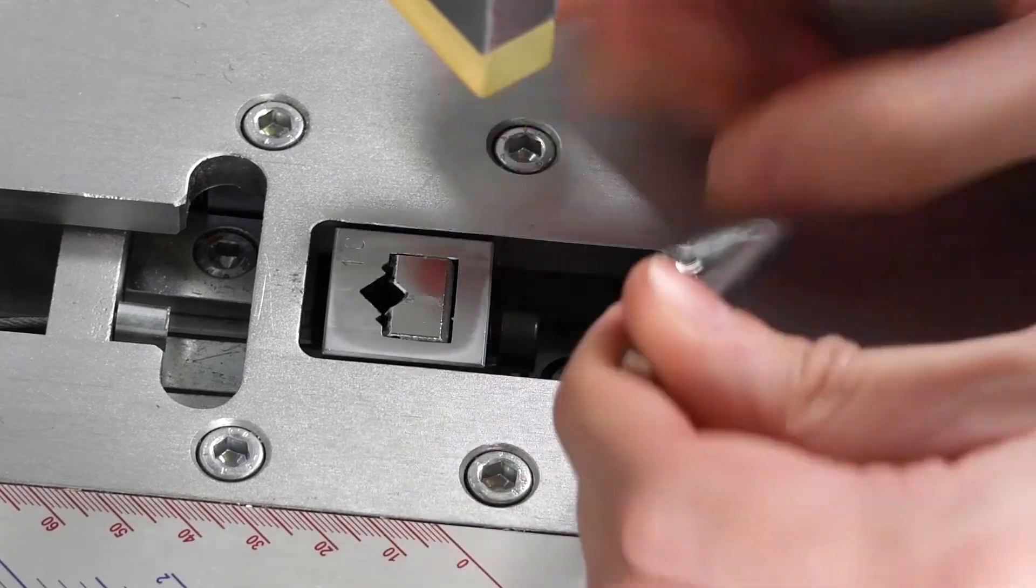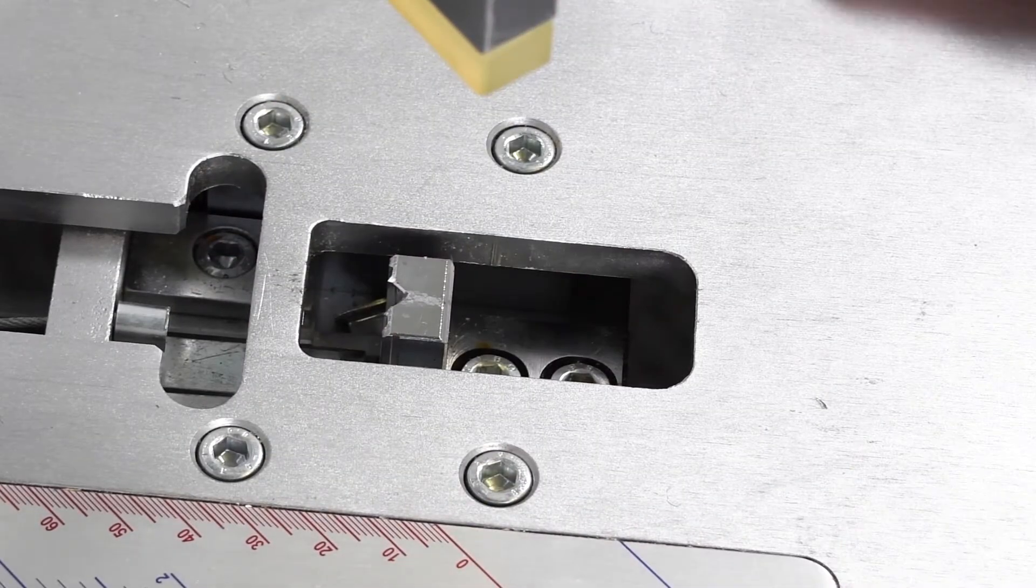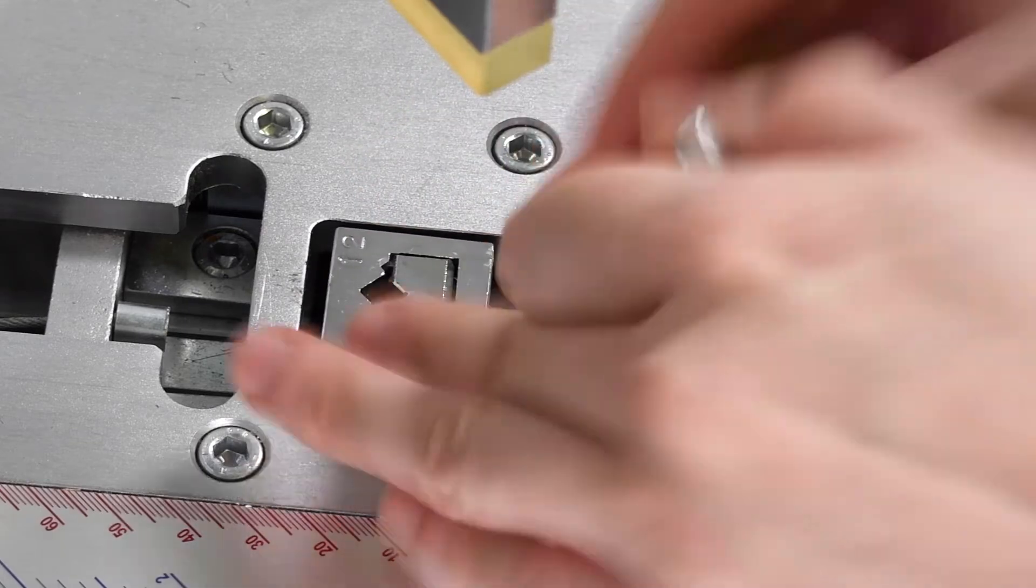Use the Allen key to loosen the bolt and the block will slide out. Then slot the right size block back in its place and tighten the bolt.